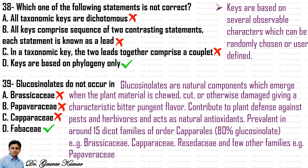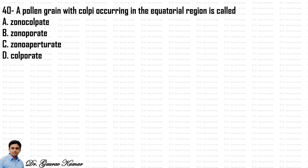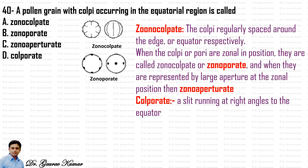Next question: a pollen grain with colpi occurring in the equatorial region is called — zonocolpate, zonoporat, zonoaperturate, or colpate? Zonocolpate means colpi are regularly spaced around the equator. When pori are in the zonal position, they are called zonoporat. When represented by large apertures at the zonal position, it is zonoaperturate. Colpate refers to a slit running at right angles to the equator. The correct answer is zonocolpate.